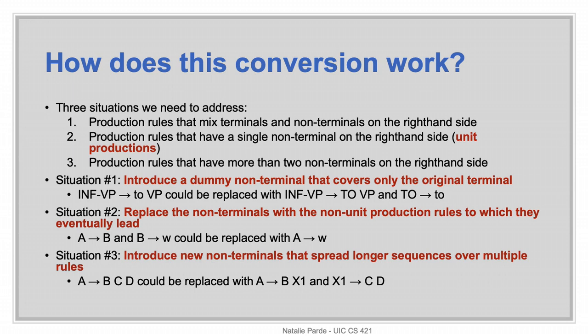When we convert from a non-CNF grammar to Chomsky Normal Form, there are three situations we need to address. First, we need to handle cases where the production rule mixes terminals and non-terminals on the right-hand side, because Chomsky Normal Form doesn't allow it. There must either be exactly two non-terminals or exactly one terminal node.